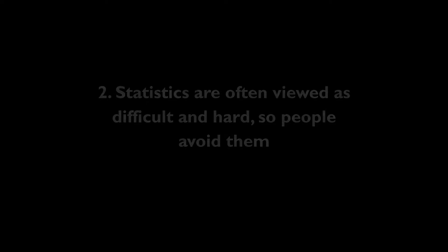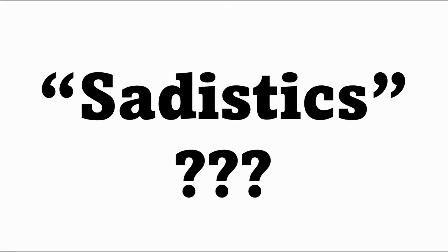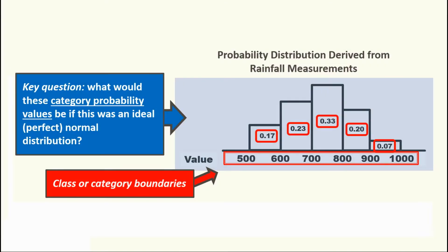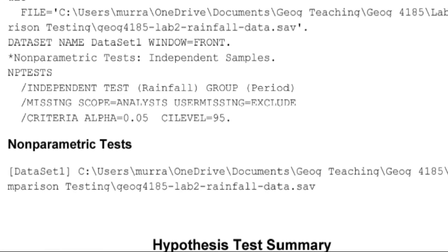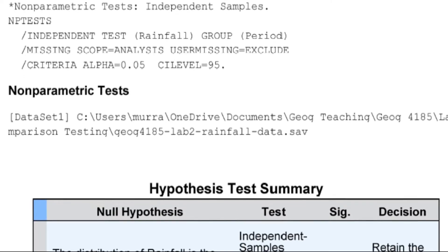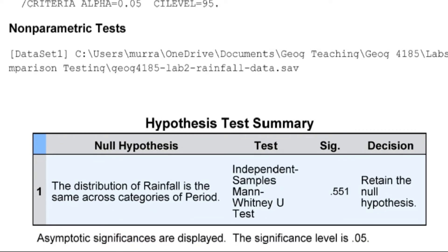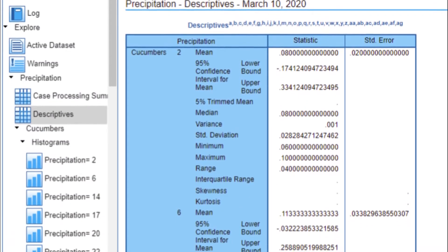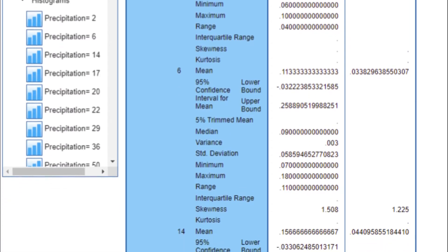A second point is that statistics are often viewed as difficult and hard. Quite naturally, a lot of people actually avoid them, and there might be people like that in this class — and that is what I expect every year. Statistics have kind of an aura to them that makes them unapproachable, and I think that's really unfortunate, because it doesn't have to be that way. But I want to acknowledge coming into the class that they are. They're seen as unfriendly, and so it's important that we do something about that.